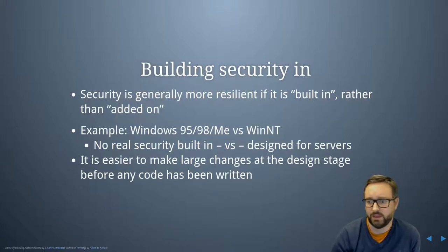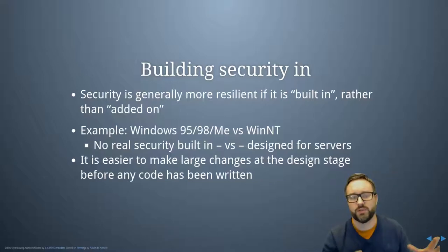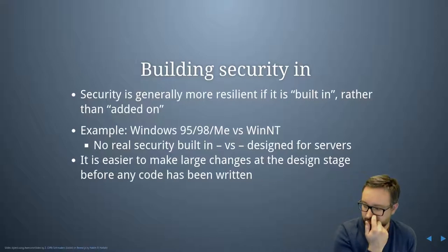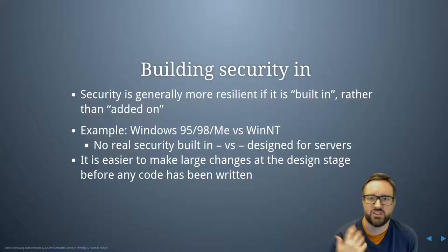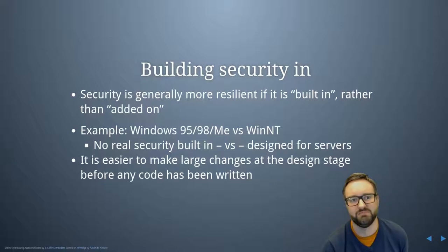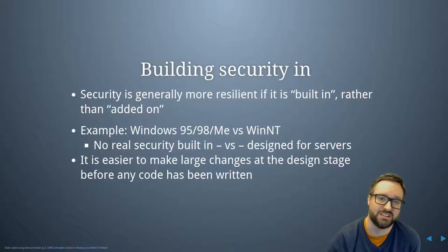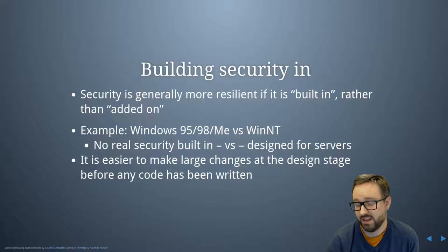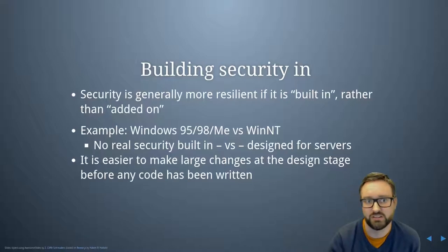A good example of this is Windows itself. Windows 95, 98, and Millennium Edition were all based on a version of the operating system that was for consumers and didn't really have any security built into it. It didn't have any access controls to speak of. Basically, the password that you typed in when you logged into the computer just changed the desktop icons and desktop background — it didn't actually stop what you're allowed to do on the system. As opposed to Windows NT, which was developed originally for servers, and they did think about security more on that side of it.